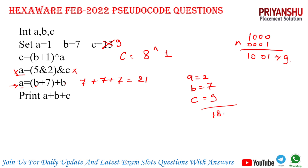Sorry for the mistake — let me correct that. Yes, a is 21. So 21 + 7 + 9 = 37 is your final answer. Let's move to the next question.